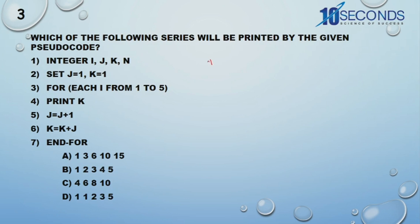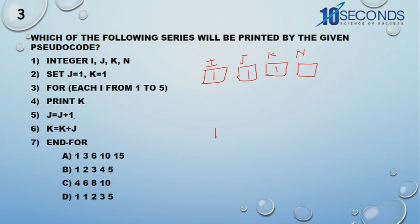Next question: integer I, J, K, N — memory is allocated to each. Set J equal to 1 and K equal to 1. For each I from 1 to 5: first, print K — the value of K is 1, so we print 1. Then J equals J plus 1, so J becomes 2. K equals K plus J: 1 plus 2 = 3. I increments to 2, and we print K — the value of K is now 3. So the output so far is 1, 3.